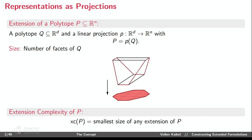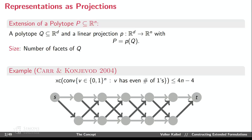You can count that we had eight facets for the red polytope and six facets for the extension — we saved two facets, not too many, not too interesting. Let's see whether we can come up with more interesting examples. One of the nicest and simplest to explain is due to Bob Carr and Cony, describing what we call the parity polytope: the convex hull of the zero-one vectors of length n with an even number of ones.